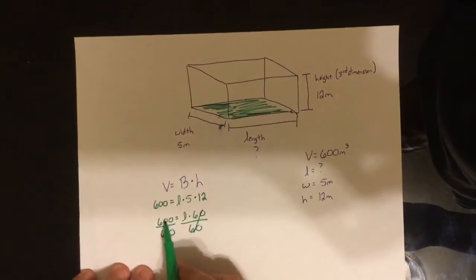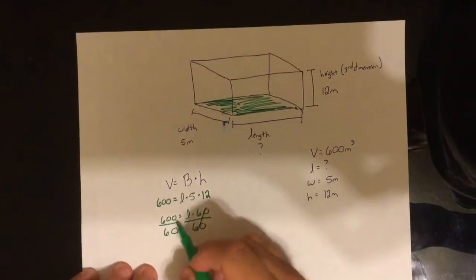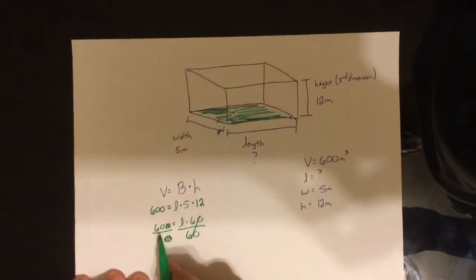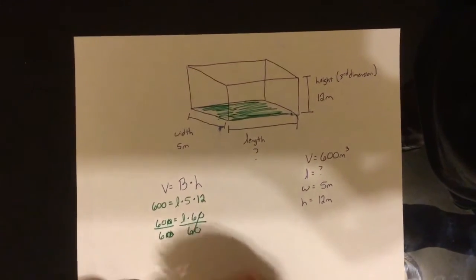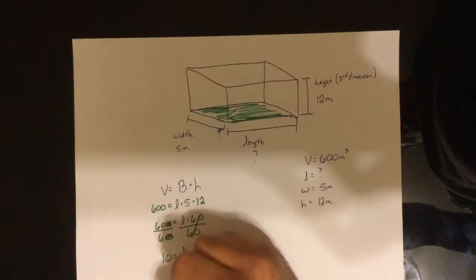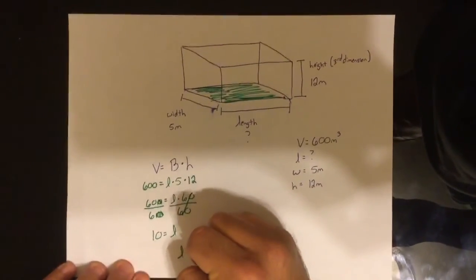Well, 600 divided by 60. You see how they both end in a zero? Get rid of it. What's 60 divided by 6? 10!